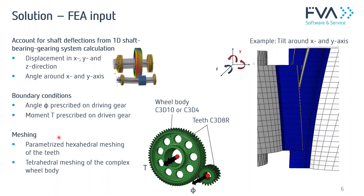For the teeth, we use a hexahedral mesh from STIRAC, which is well known to be good for contact analysis. For the wheel body, a tetrahedral mesh is favored to cope with the complexity that may come from your CAD body. This can be either linear tetrahedral elements or quadratic tets, chosen during the meshing process.